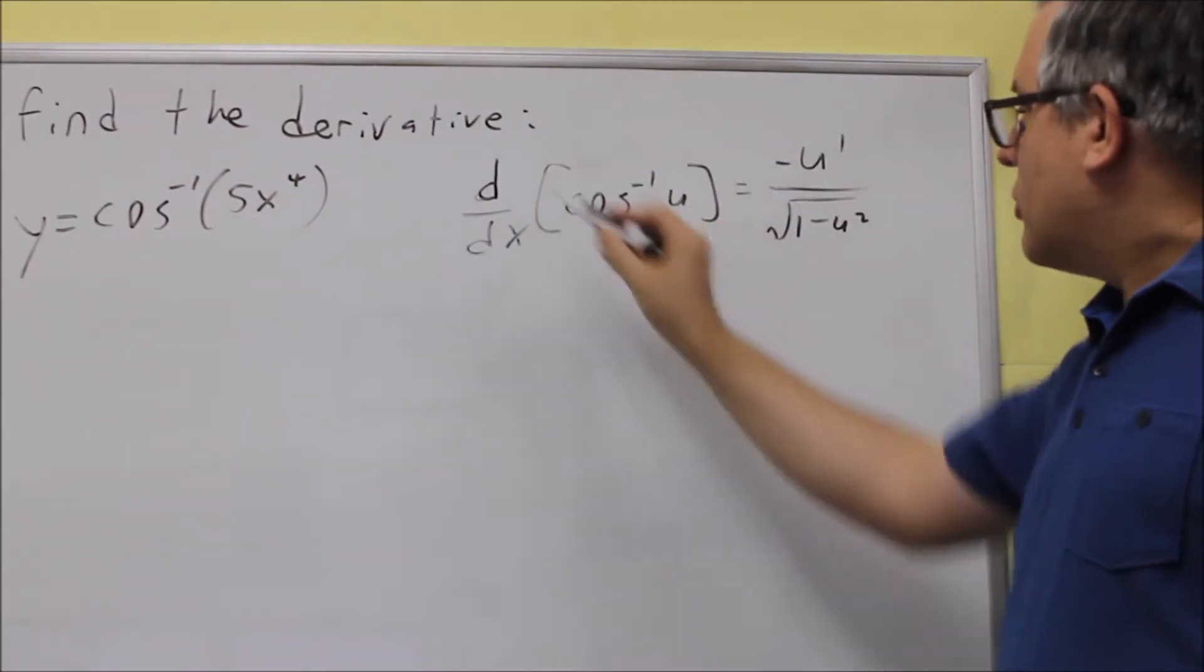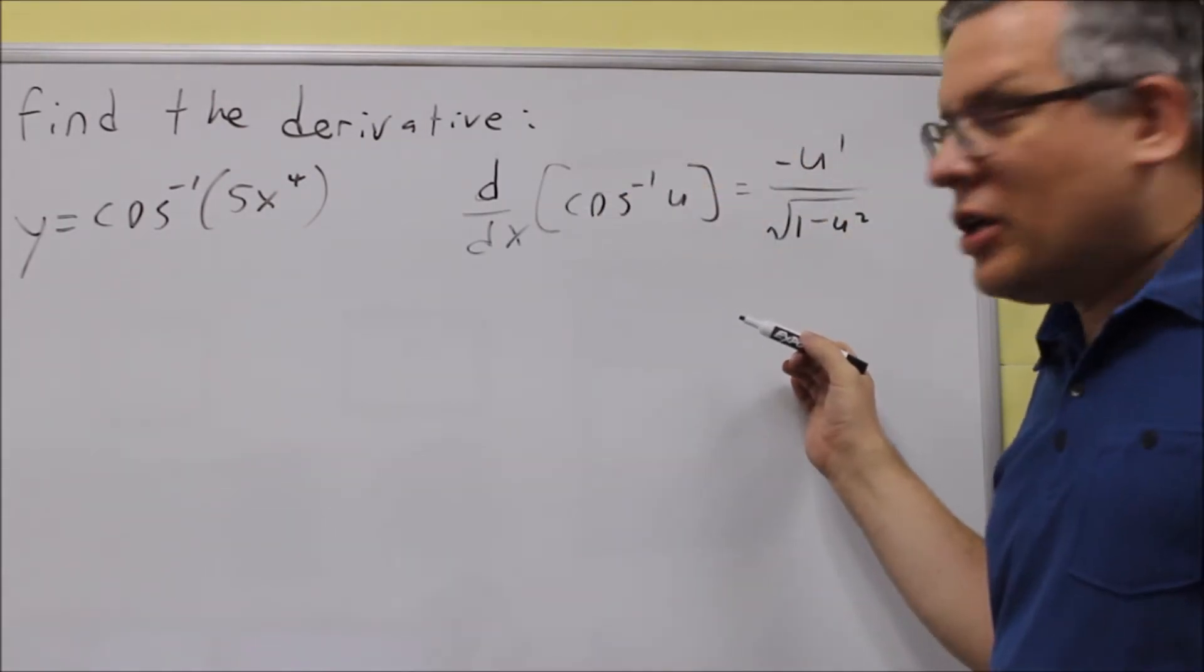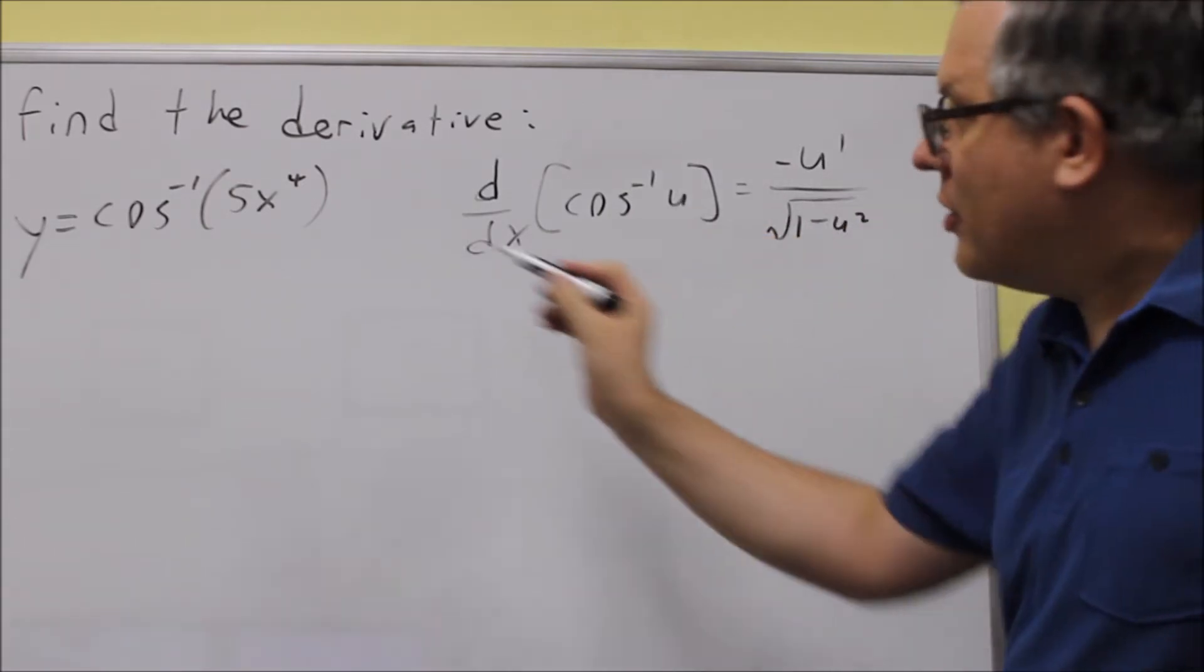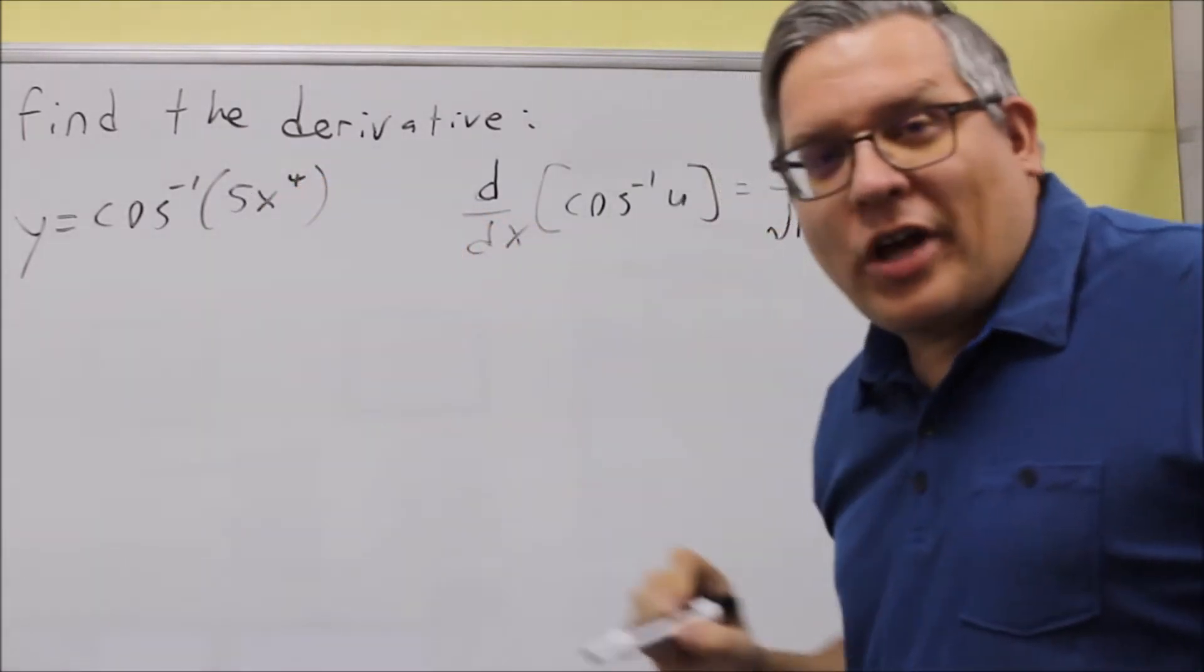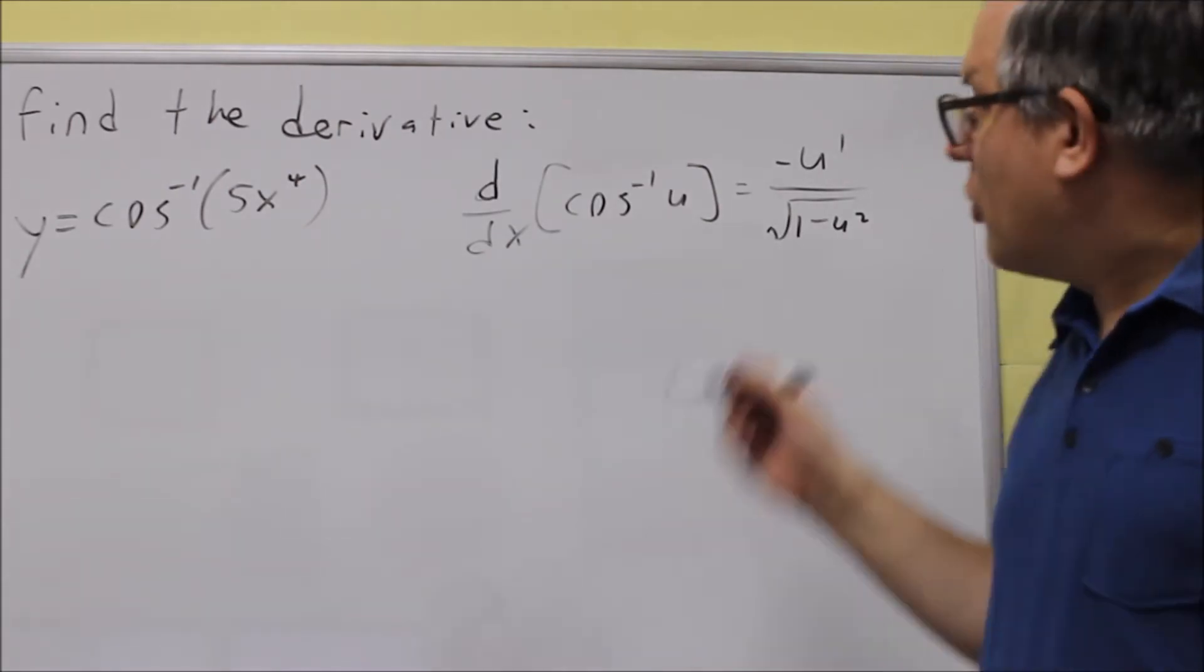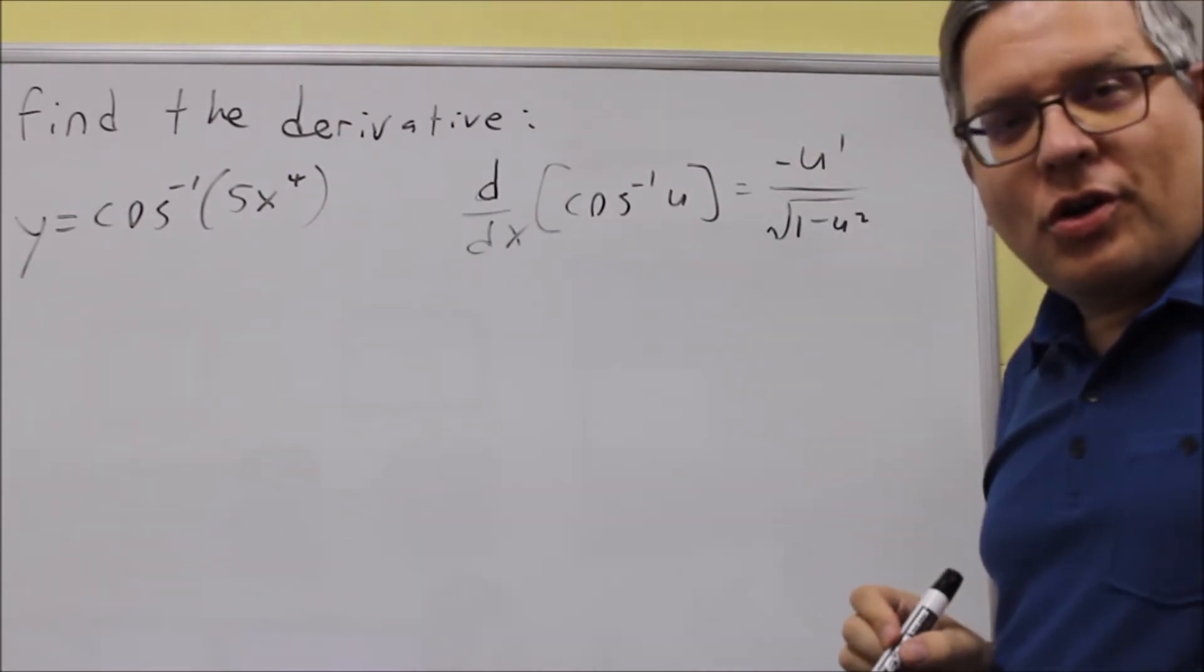The formula that you need for this is this one right here. There's a u there because this part inside, if it's not a regular x, then that's a u. So we're going to follow this formula in order to do that.